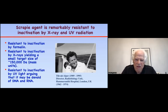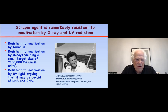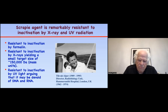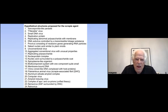Some of the most interesting data at that time on what the scrapie agent might be was done by a woman named Tigva Alper and collaborators. Earlier work had shown the scrapie agent was resistant to formalin; she showed it was resistant to inactivation by X-rays, yielding a very small target size of about 150,000 daltons. She also showed the scrapie agent was very resistant to inactivation by UV light, arguing it might be devoid of DNA or RNA. There were enormous lists of 24 different possibilities for what the scrapie agent might be.